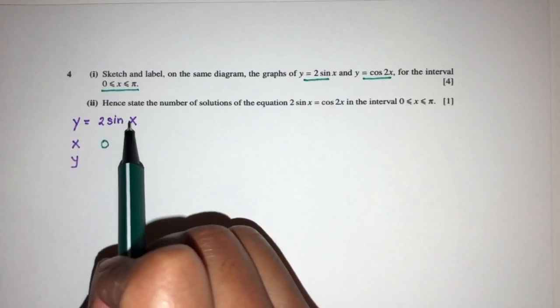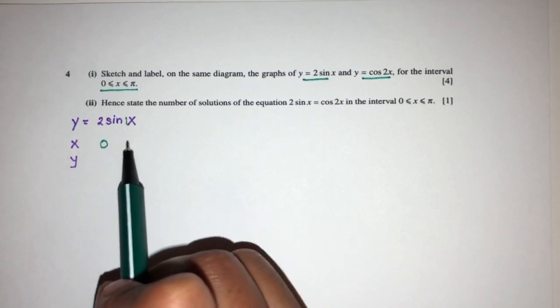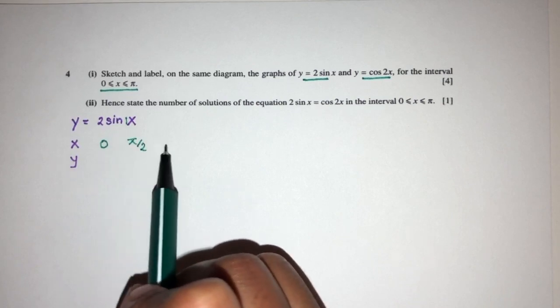Because the coefficient of x is 1, I will choose 90 divided by 1, that is 90 degrees which is π/2. So plus 90, plus 90, that should be π.